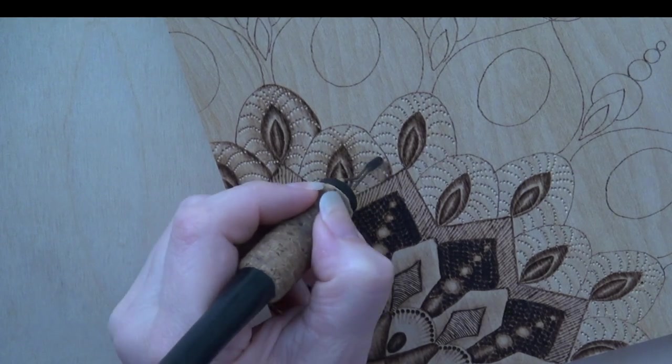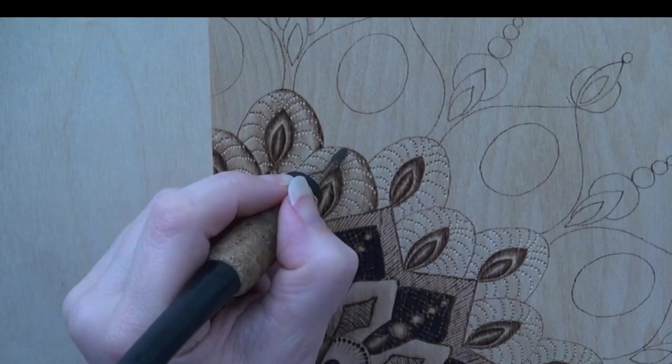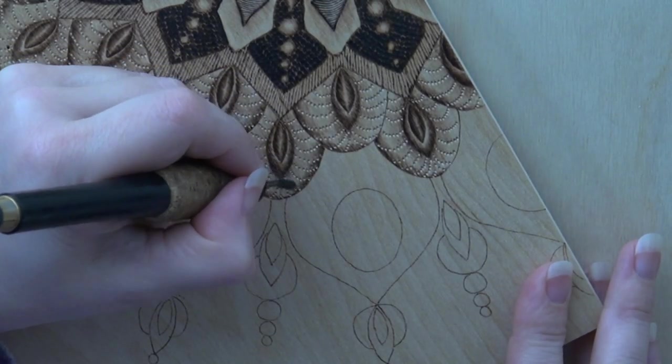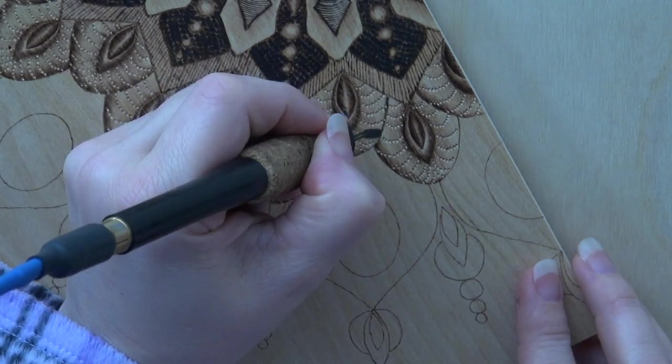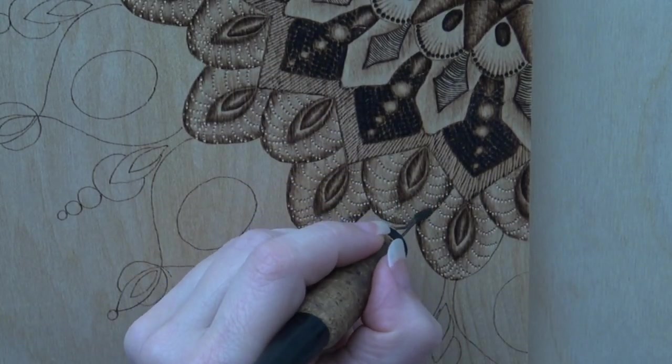Burn pull-away strokes along the outer edge of the ovals. Start these strokes on the oval edge and pull them towards the oval center. These pull-away strokes should be in the brown color range when they start and fade to light tan near the end of the stroke.